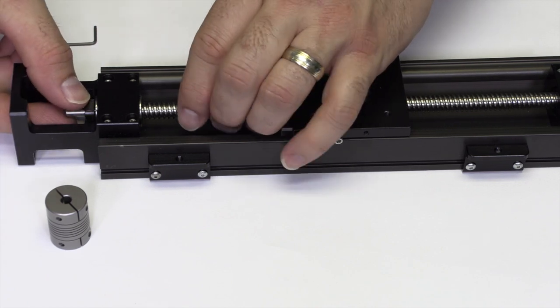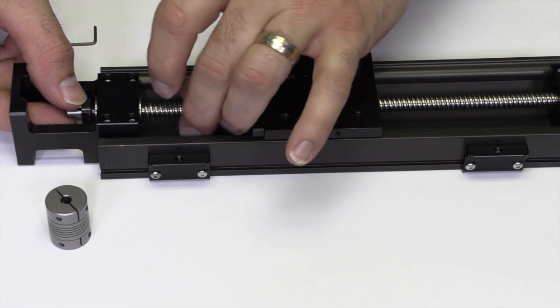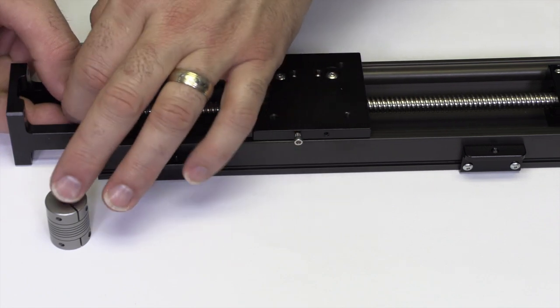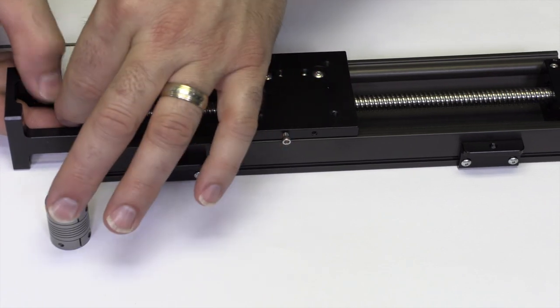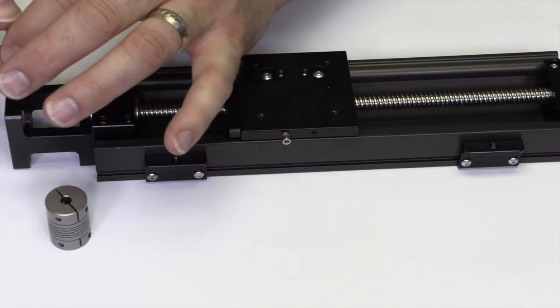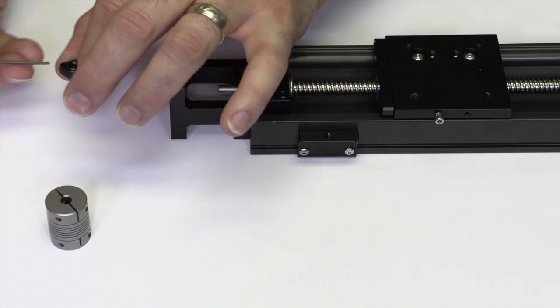You can usually remove the lock nut by hand, but if it is tight, use a 12mm wrench to loosen it. You can hold the carriage to assist in loosening the nut unless the carriage lead screw nut is broken. Remove the square lock nut from the motor end of the lead screw.